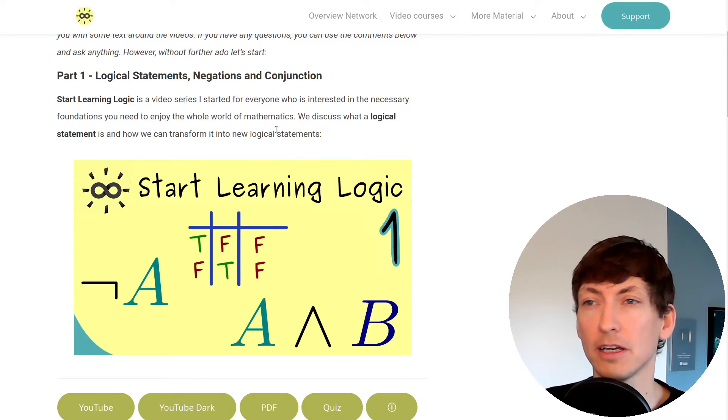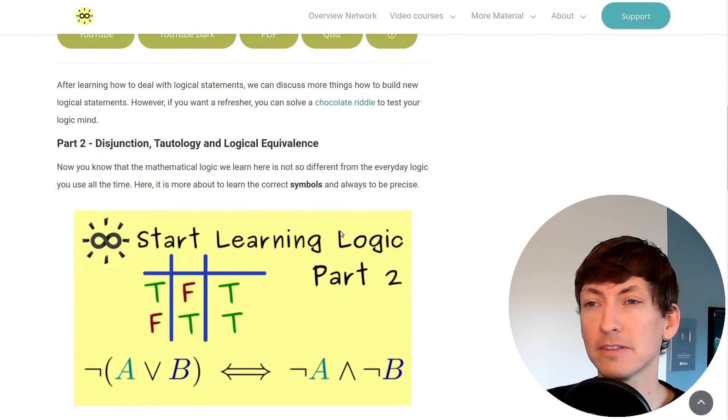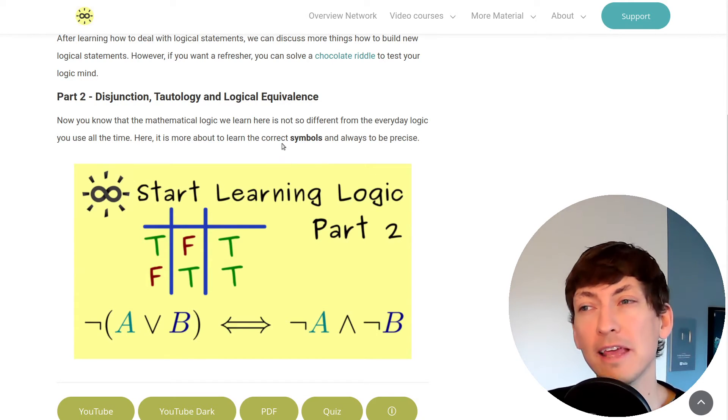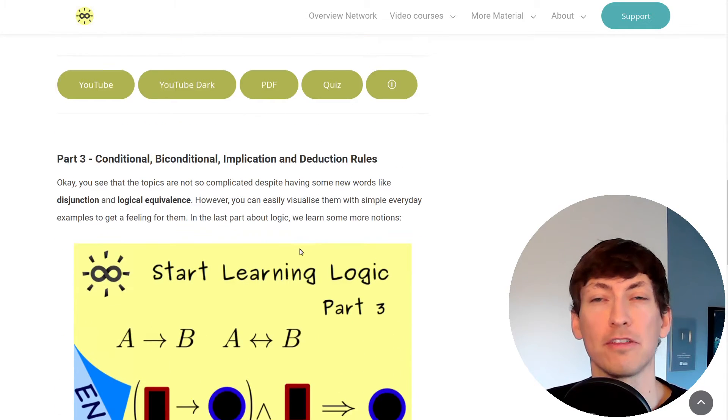In the first part on logic, I just explain what logical statements are and how we can combine them here with the conjunction and the negation. And then we just continue to the next combinations, so here you see disjunction, tautologies, and logical equivalences. So you see these videos explain the symbols we use in mathematics.